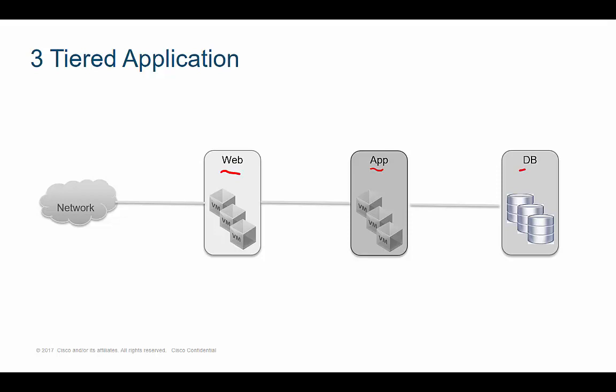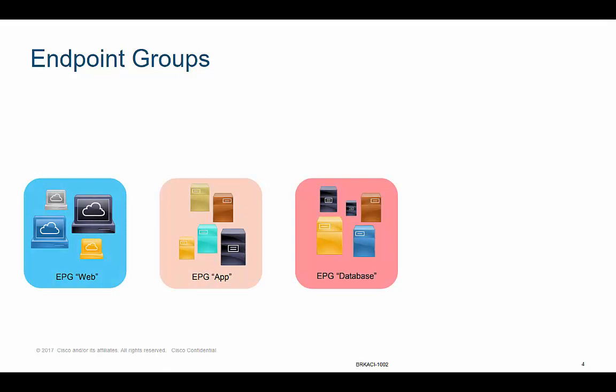An example of a specific application might be Exchange. End users, when they interact with email, might access Outlook Web Access servers. However, the application is actually running on a different set of servers, and there's yet another set of servers running the Exchange database. This is an example of a three-tier application. In ACI, devices are placed into what are called endpoint groups. The Outlook Web Access servers might all be in one endpoint group, the application servers in a different endpoint group, and the database servers in a third endpoint group.